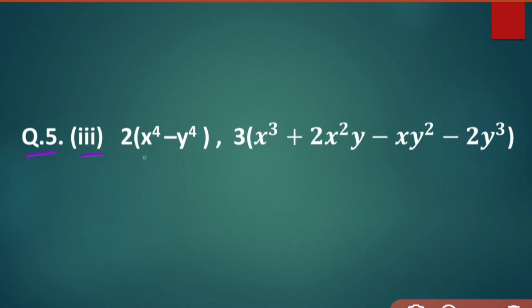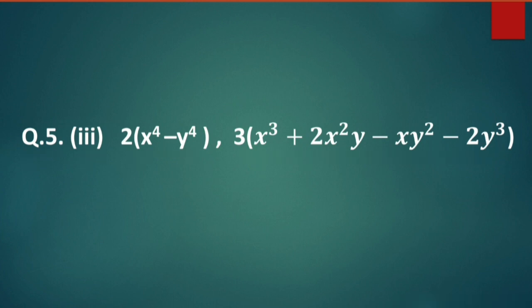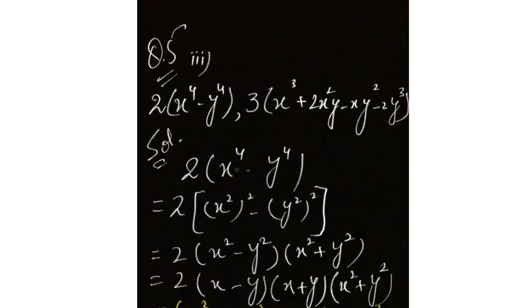Hamare paas is waqt 2 values hain. Pehli value dekhne mein mushkil lag rahi hai lekin bilkul bhi mushkil nahin hai — inshallah aapko koi problem nahin hogi. Sabse pehle, x⁴ minus y⁴ — yeh clear cut a² minus b² ka formula hai. Toh yeh ban jaega: x² ka square aur y² ka square, kyunki woh 4 hota hai.